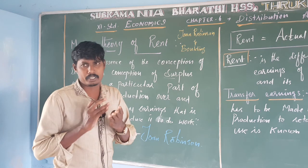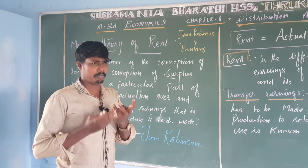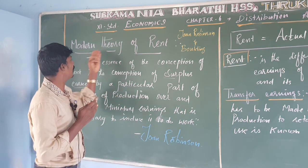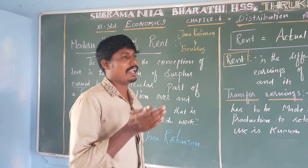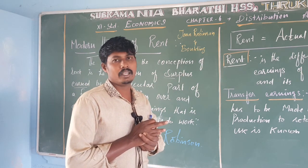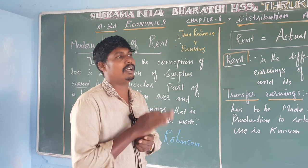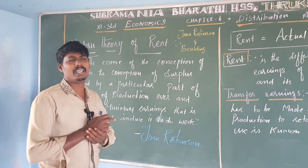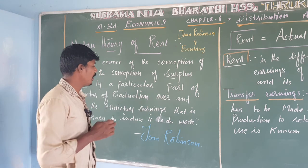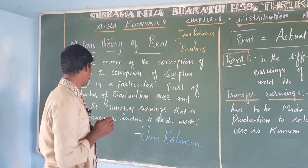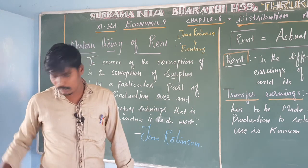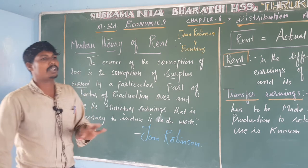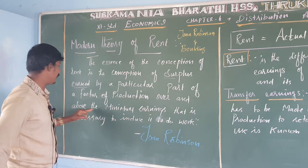There are four categories in the factor of production: Land, Labour, Capital, and Organisation. Rent refers to earnings over and above the minimum earnings — that is one of the most important concepts in this theory.